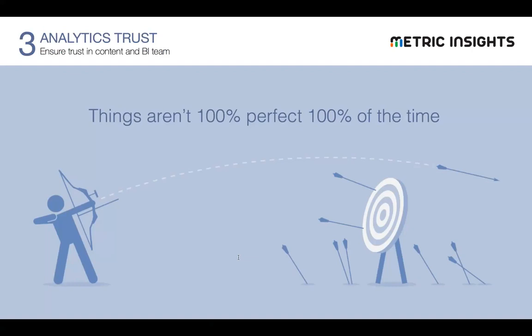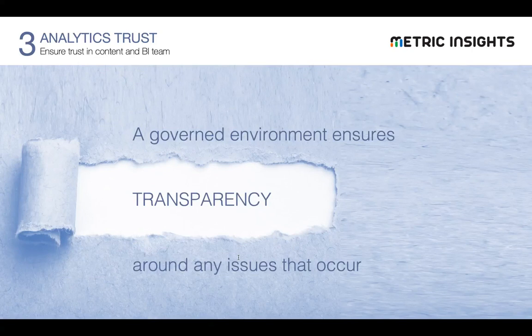How is it that users understand what's going on? In a well-governed environment, there's transparency. A business user knows whether the data is accurate, delayed, or has any kind of issue — and they know it in a timely way. They don't discover it on their own and then inform the BI team. You don't get angry emails saying 'this data is bad.' Instead, before users even look at the data, they're given the context: 'Hey, there's a problem and we need to take a look at it.' That's absolutely key.